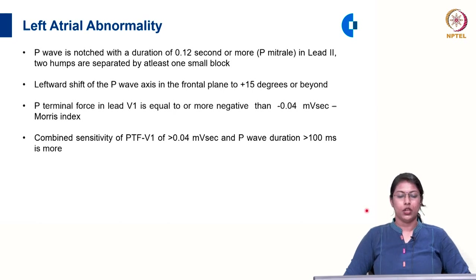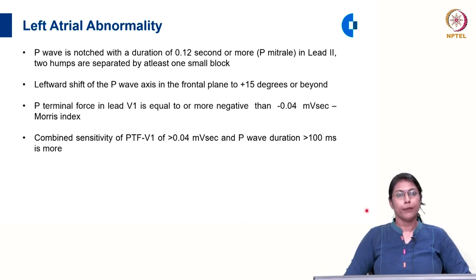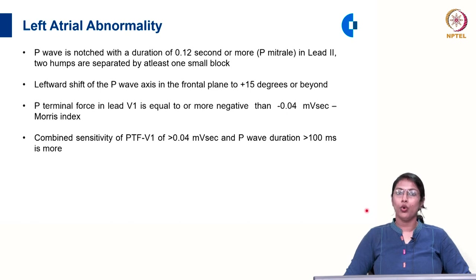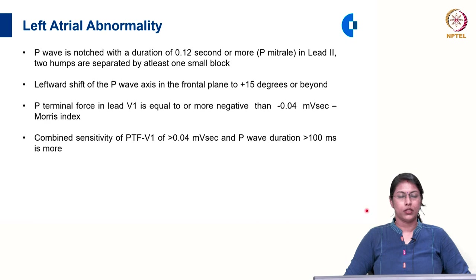A P terminal force in lead V1 equal to or more negative than 0.04 millivolt-second is a key criterion. The P terminal force is the product of the amplitude and duration of the negative component of the P wave in V1. Since both amplitude and duration are increased in left atrial abnormality, this P terminal force will be more than 0.04 millivolt-second. Combined sensitivity of P terminal force in V1 more than 0.04 millivolt-second and P wave duration more than 100 milliseconds is much more useful in diagnosing left atrial abnormality. This is called the Morris index.